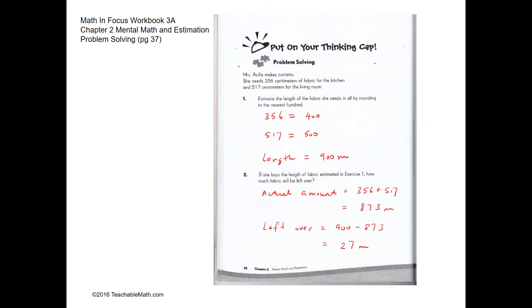Next, let's look at the next question. So for question one, estimate the length of the fabric she needs in all by rounding to the nearest hundred. So 356 rounded to the nearest hundred is 400. 517 to the nearest hundred is 500. So together she would need 900 meters.